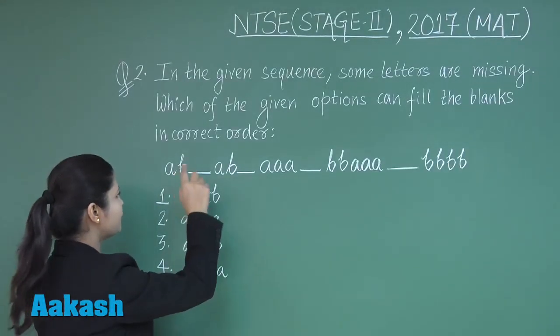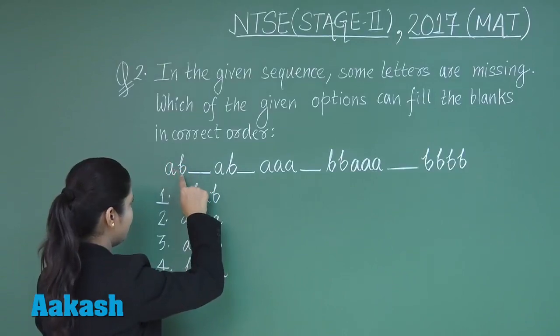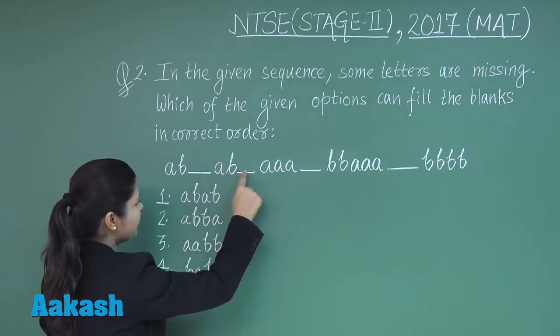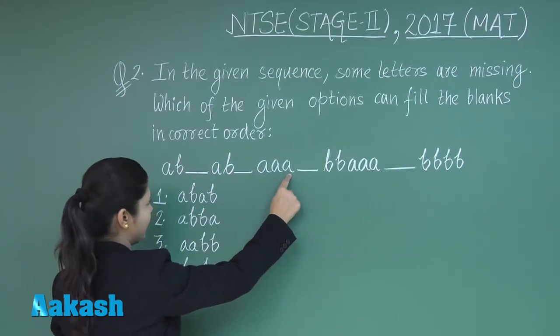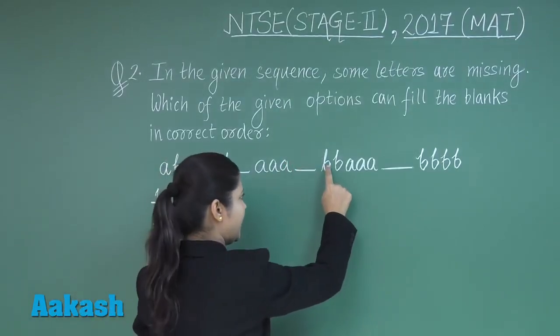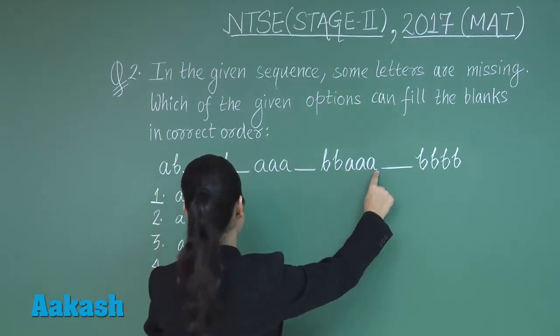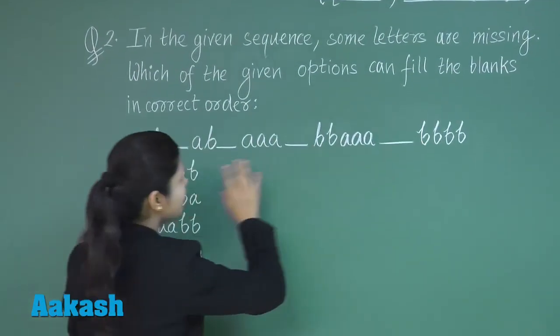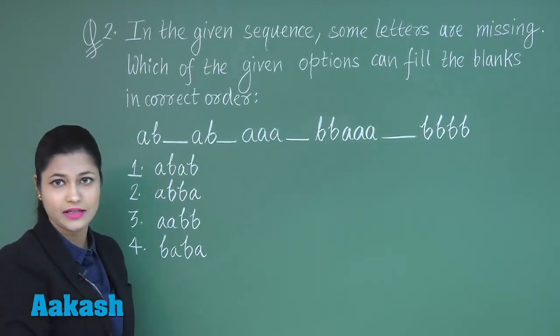When you substitute the first option, you get here a b a b b, then you get a a, then again a b b, further a a, and five times b. But still we don't find any pattern here.